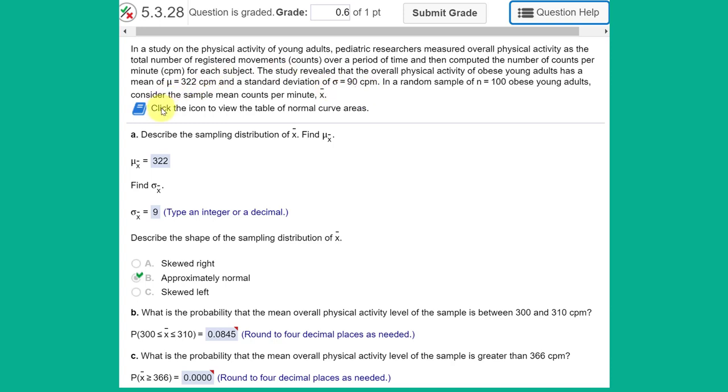They give you a link to the table but if you use StatCrunch you're going to save yourself a lot of heartache and mistakes. The first question is describe the sampling distribution of X bar which is just the mean of the samples. Remember that the mean of the sampling distribution of X bar is equal to the mean of the population which is in this case mu of 322.